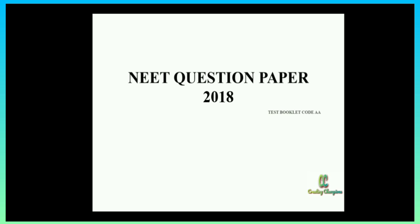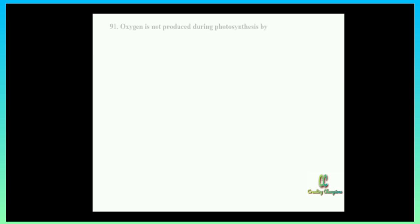Let us discuss some questions and the detailed solutions. First question: oxygen is not produced during photosynthesis by — option one: Cycas, option two: Nostoc, option three: green sulfur bacteria, option four: Chara.